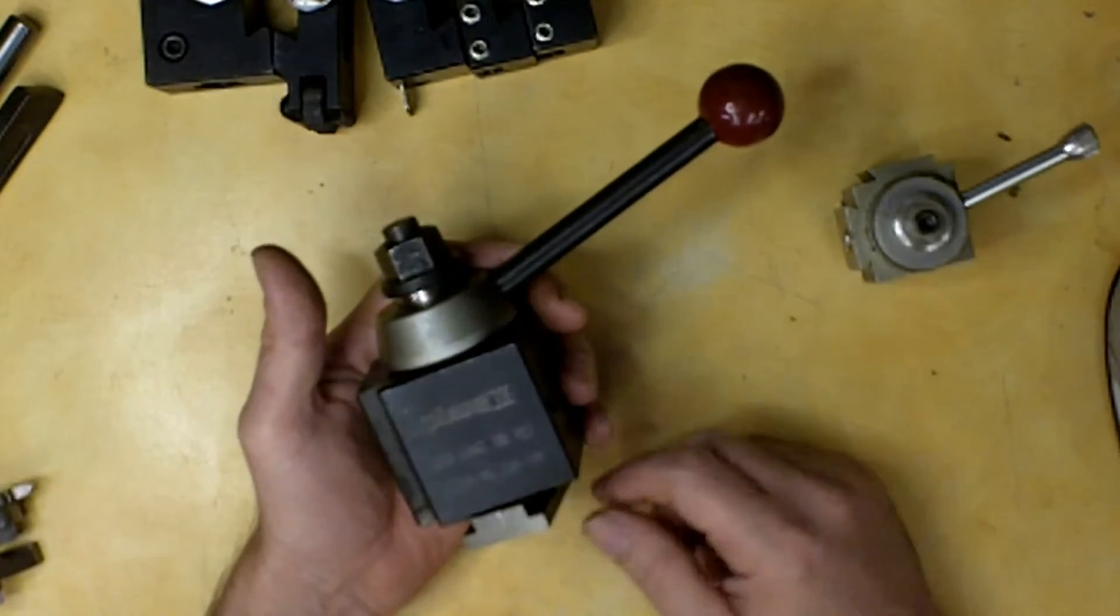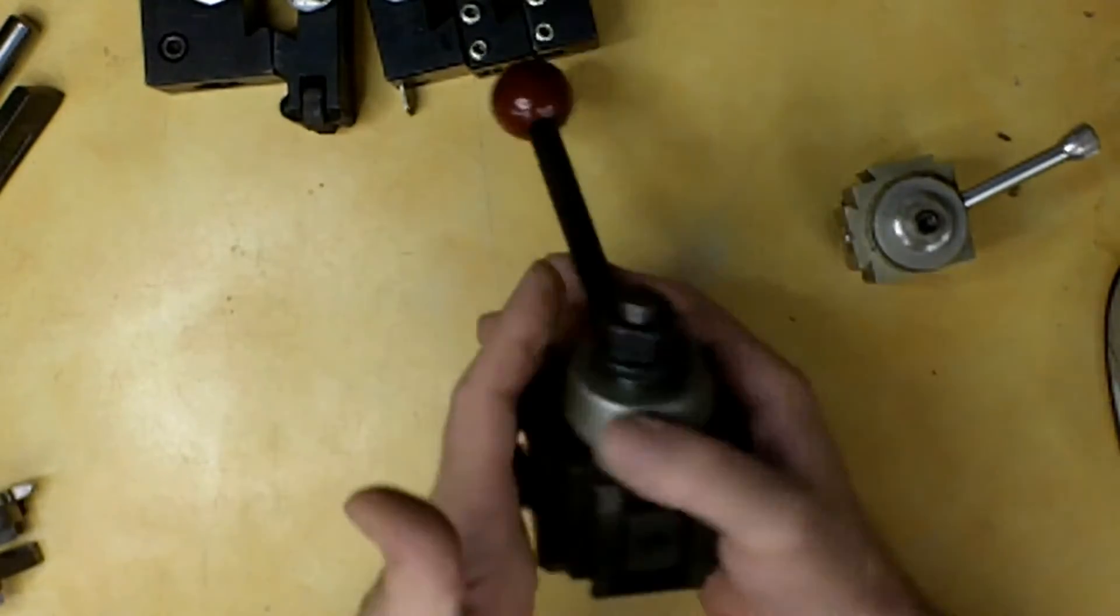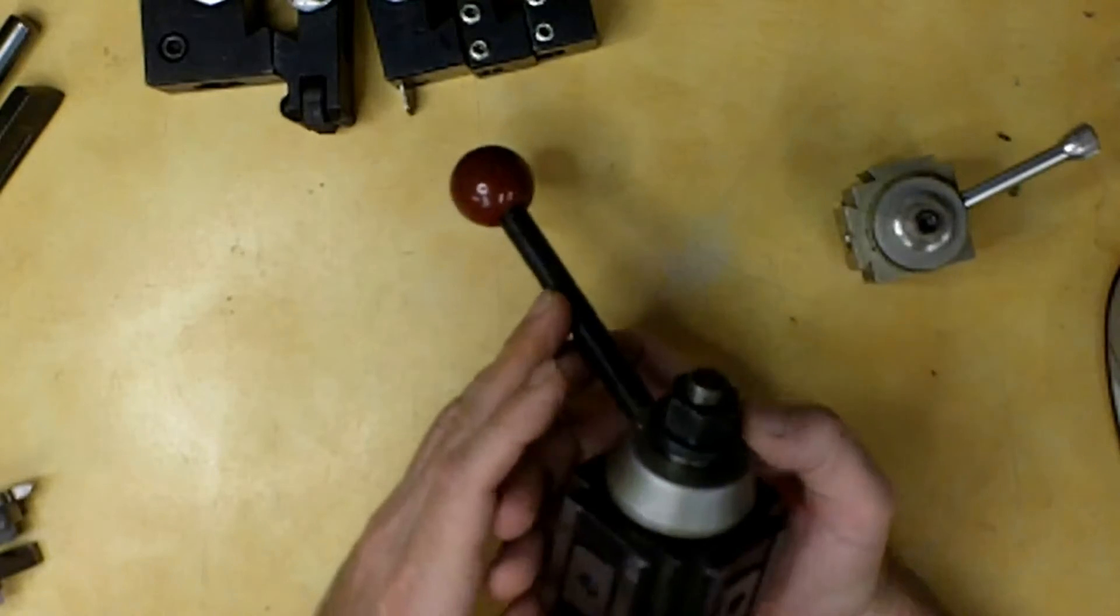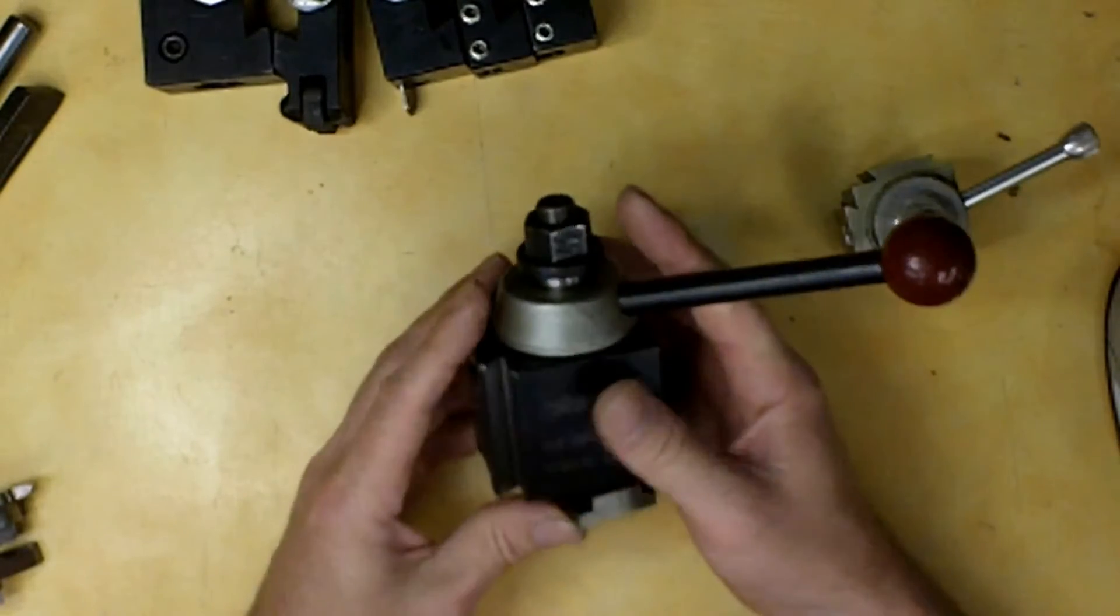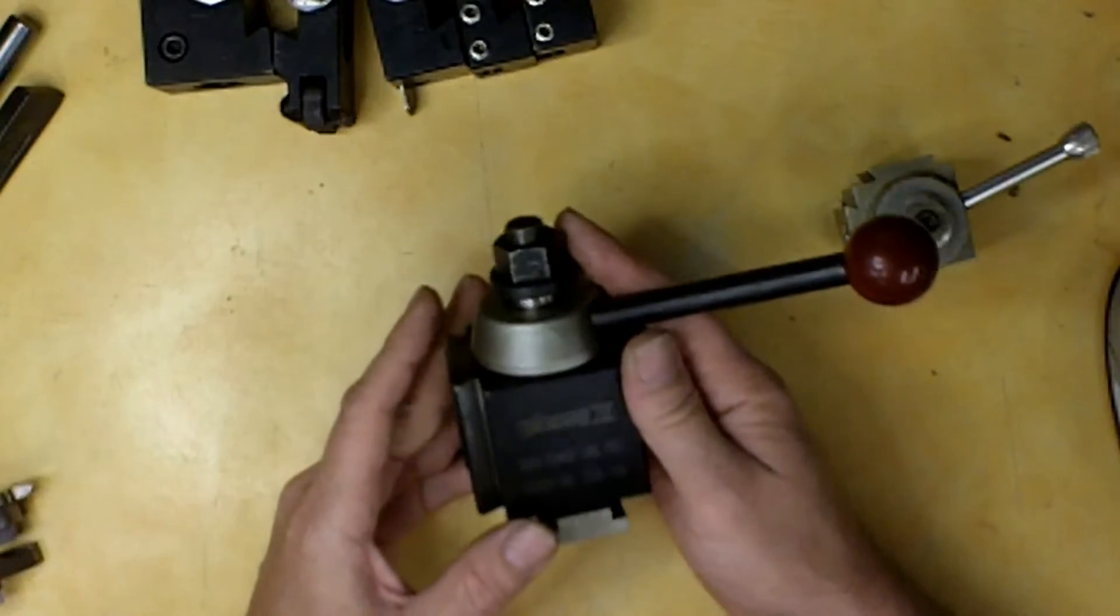Both of these actually are kind of a Aloris knockoffs. This is the Phase Two, comes out of China. This is the piston version. I would have preferred to have purchased the wedge style. I'm not going to get into that. But I didn't. I was saving a few bucks when I bought it.